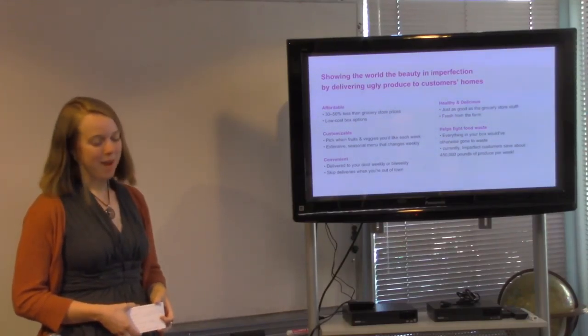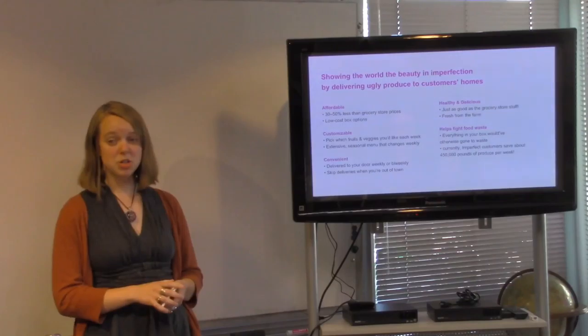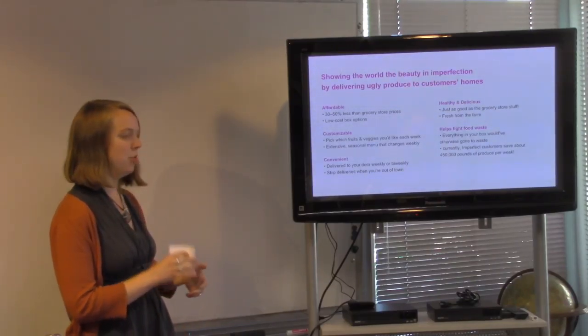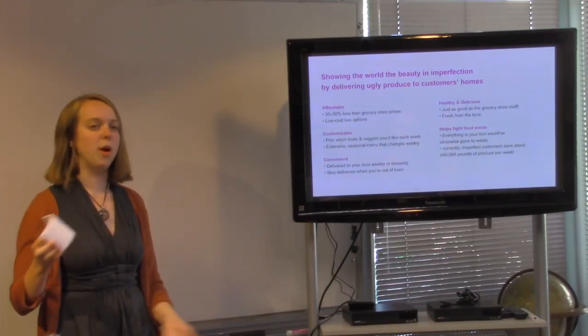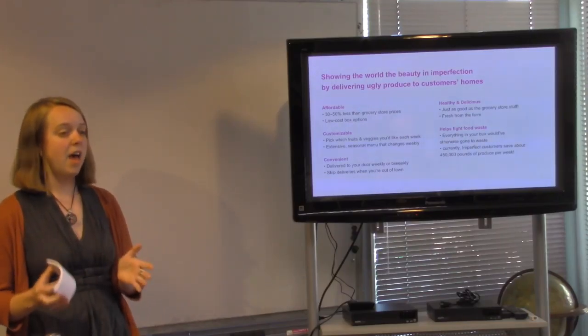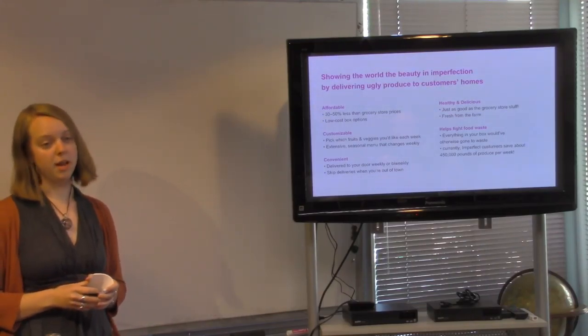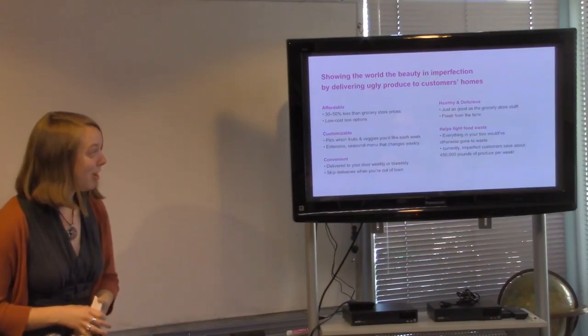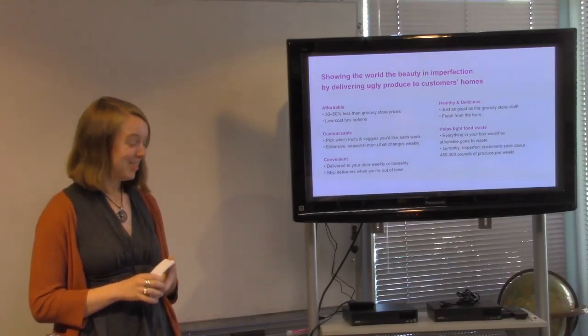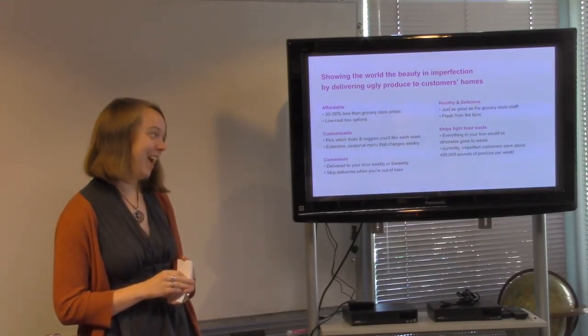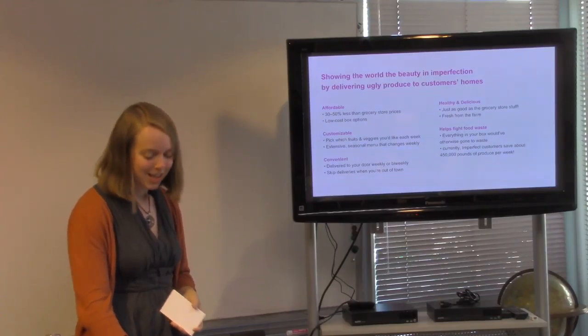And, of course, our main mission coming back to fighting food waste. So everything in the boxes we send out would otherwise have gone to waste. We're not diverting this from having gone to food banks. We're not taking food that farmers were otherwise going to sell to animal feedlots. This is stuff that they had no market for before they partnered with Imperfect, and that they would have thrown into landfills. So currently, Imperfect customers save about 450,000 pounds of produce every week. Which is pretty awesome. And that number just keeps going up. It surprises me. Every month we hear that it's even more. So that's really exciting.